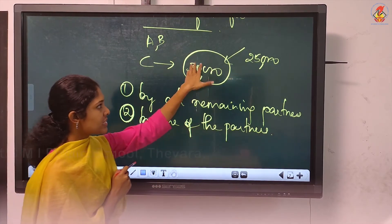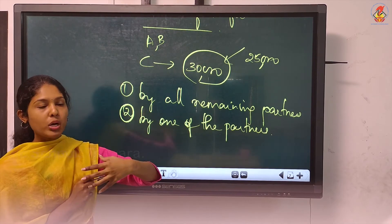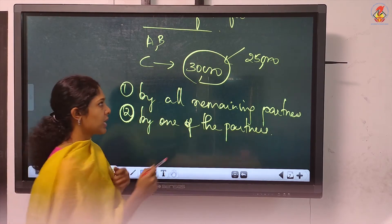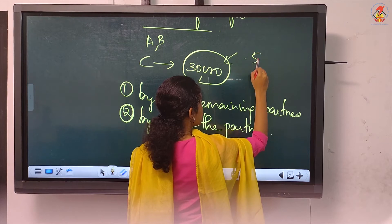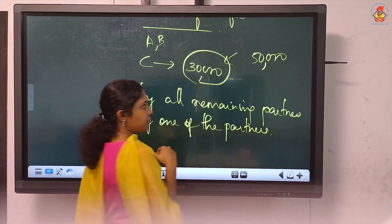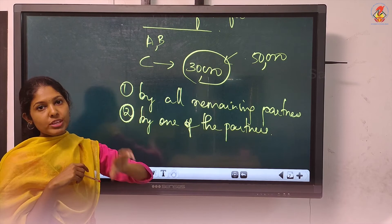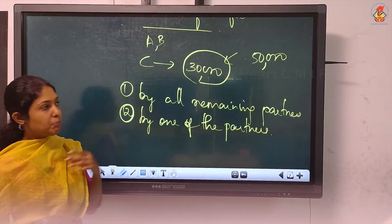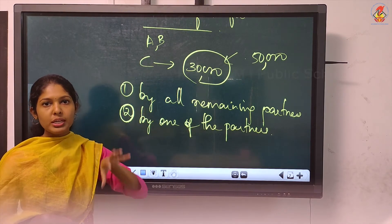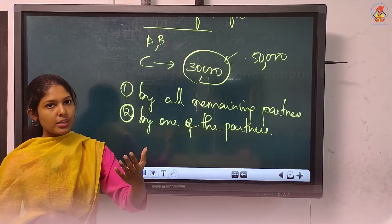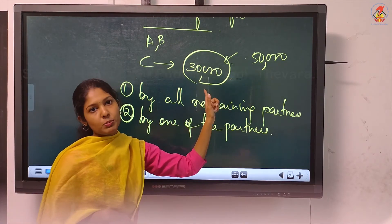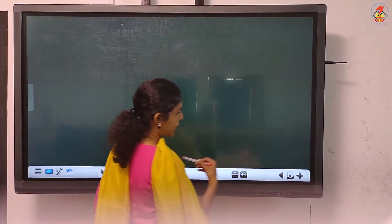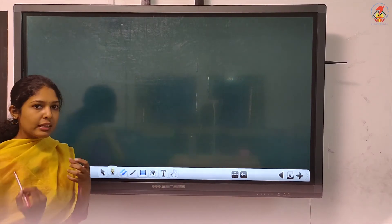In these types of questions, the deficiency is to be borne by all remaining partners or by one of the partners. Whichever is higher - the guaranteed profit or the calculated share - you have to pay. For example, if C's calculated share is 25,000 but the guaranteed profit is 30,000, you must pay 30,000. If the ratio gives C 50,000, then you pay 50,000. The minimum guaranteed profit means it cannot be less than that amount.